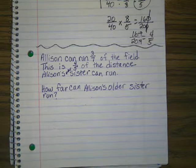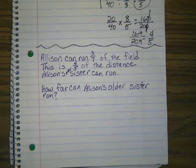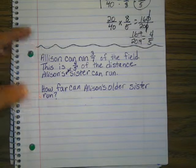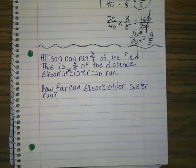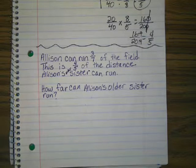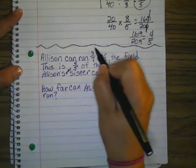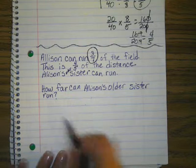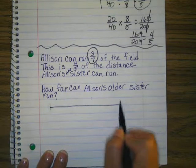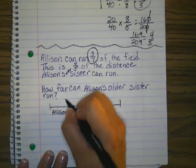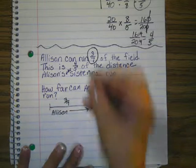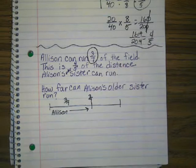Any time we start with a problem-solving story like this, we need to stop and think: what are the facts in the problem? What do I already know? So we know that if I have a football field, Allison can make it to 3/7. I could say maybe that line is 3/7. What else do we know? What's our other fact?